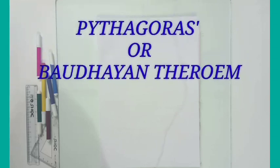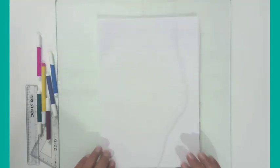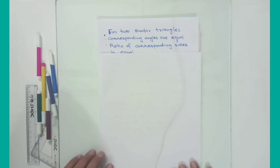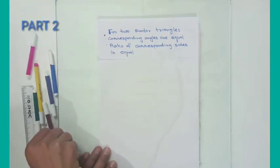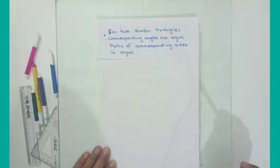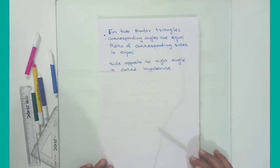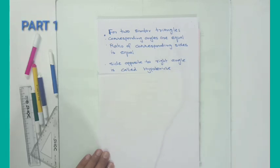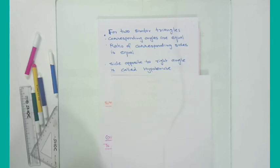Hello students. In the last video we talked about Pythagorean triplets, and in this video we would try to understand the proof for Pythagoras or Baudhayan theorem. Now in order to understand Pythagoras theorem we must know that for two similar triangles, corresponding angles are equal and the ratio of corresponding sides is also equal. Also, in any right triangle the side opposite to the right angle is called the hypotenuse.